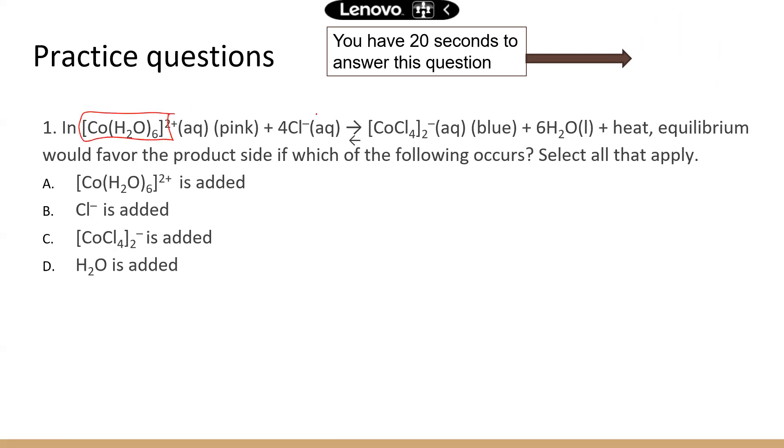So these are reactants, and these are products. Now, when you see Aq, that means aqueous. So the chemical is in a solution form.